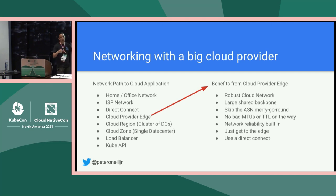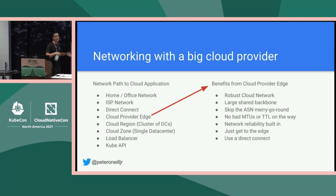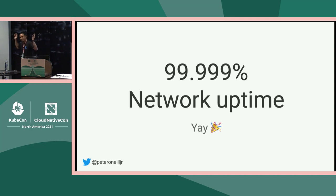With the introduction of the cloud edge, you're able to bring your application closer to yourself, your customers, your end users. Connecting to your cloud's edge gives you access to their robust cloud network. You're able to share the large backbone that your cloud provider has. You're able to skip the ASN merry-go-round being passed from ISP provider to provider — no miscellaneous bad MTUs or TTLs. You're not constrained to all the mishaps on the wild frontier of the internet. You just need to get to this edge network and you're able to get very reliably to your application — five nines of uptime.